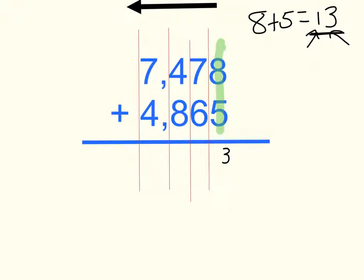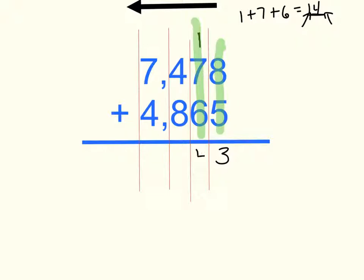Now I want to add the numbers in my tens column. 1, 7, and 6. 1 plus 7 plus 6 is 14. But I can't have 14 in my tens column. 14 tens is 100 and 4 tens. So I put the four tens here in the tens column, and carry the 100 up here in the hundreds column.